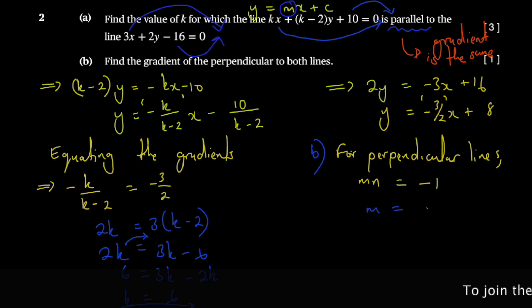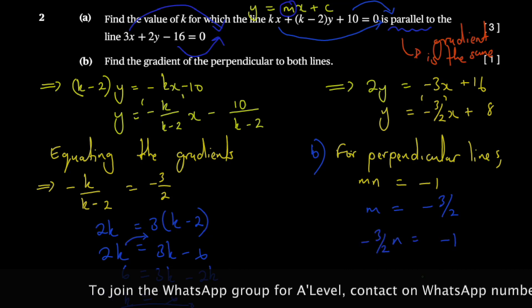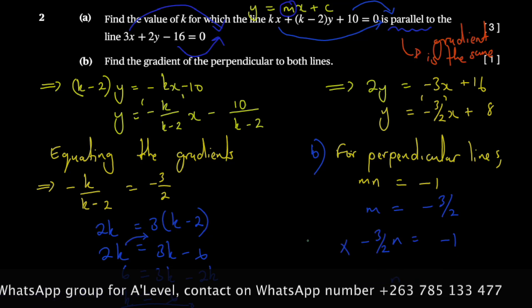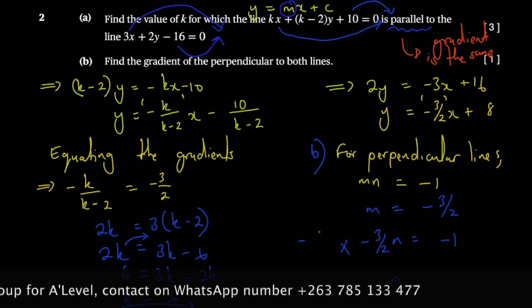You can say m = -3/2, so we want to find n. So it'd be -3/2 × n = -1 like this.